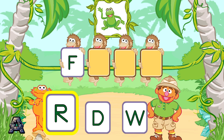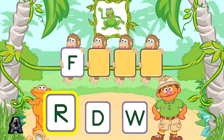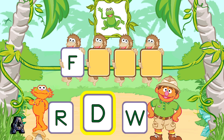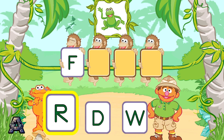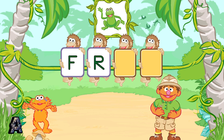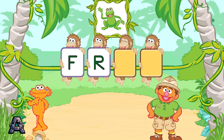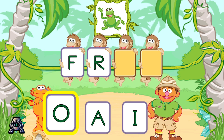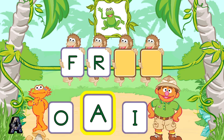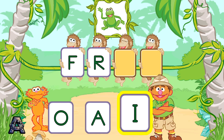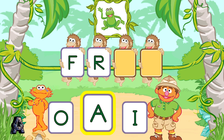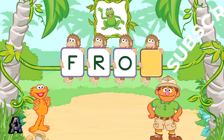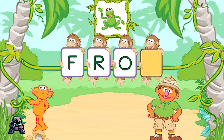To pick a letter, tilt your Wii Remote back and forth and then jump. That was great! R is the next letter in the word frog. Next, pick the letter O. Good job! O is the next letter in the word frog.